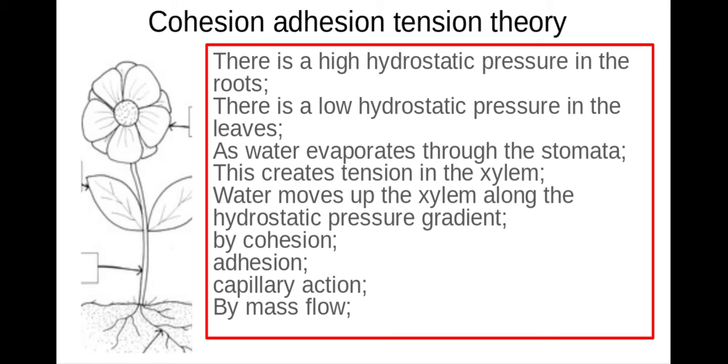Now the last marking point here is for mentioning by mass flow. It's a bulk movement of water from the roots to the leaves. It's a bulk movement of water so that's why it's called mass flow. So this is in a red box because it's taken directly from the mark scheme.